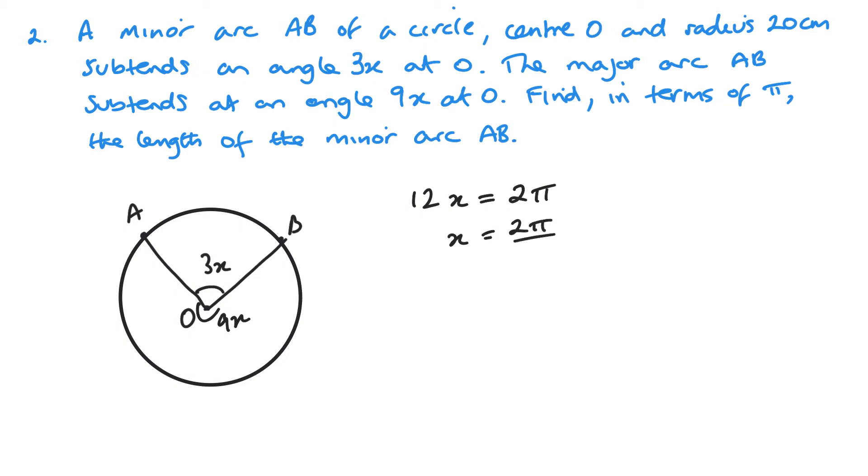So first things first, we've got 12x in total, and that's equal to 2 pi radians. So x equals 2 pi over 12 or pi by 6. The radius here is 20 centimeters. So now length equals r theta, and r is 20 and theta don't forget is 3x. So that's 3 lots of pi by 6, and that leaves me with 10 pi centimeters. Common mistake there would be just to use the value of x as theta instead of 3x for the minor arc.